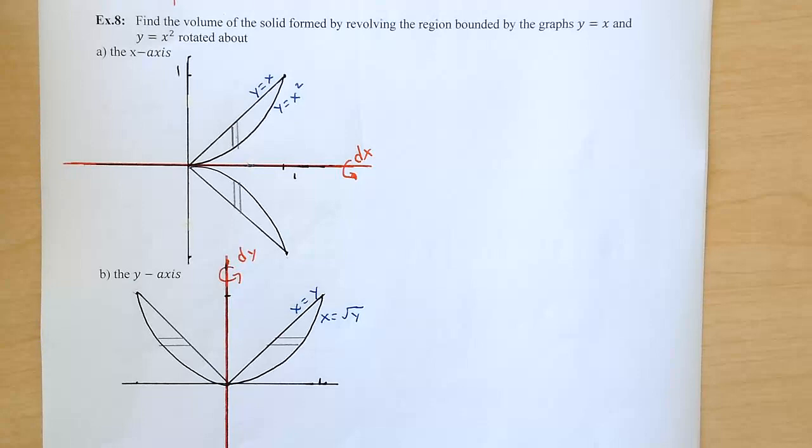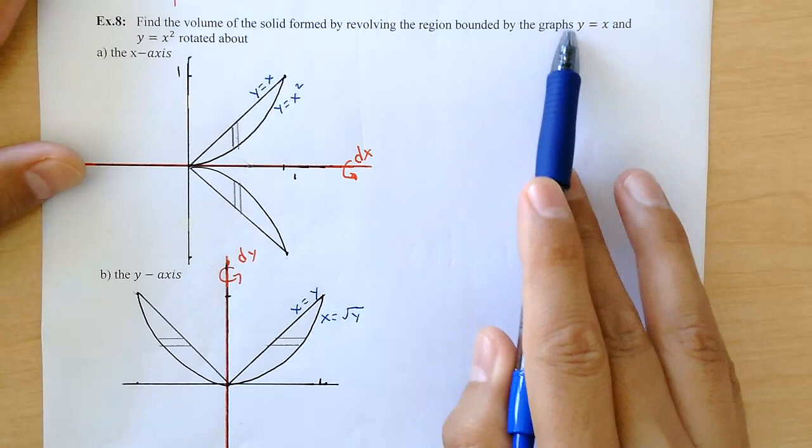So this is example number eight for the Washer method. They're asking us to rotate the region bounded by y equals x and y equals x squared.